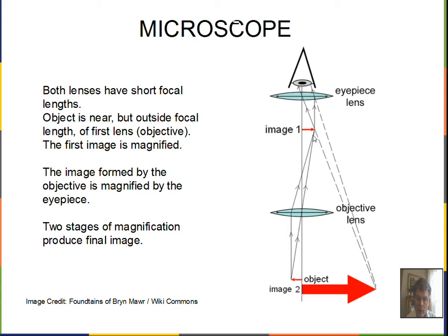We form a real image. The eyepiece lens uses image one as its object. This image one is slightly inside the focal point of the eyepiece, and consequently we get a simple magnifier action for the eyepiece lens.